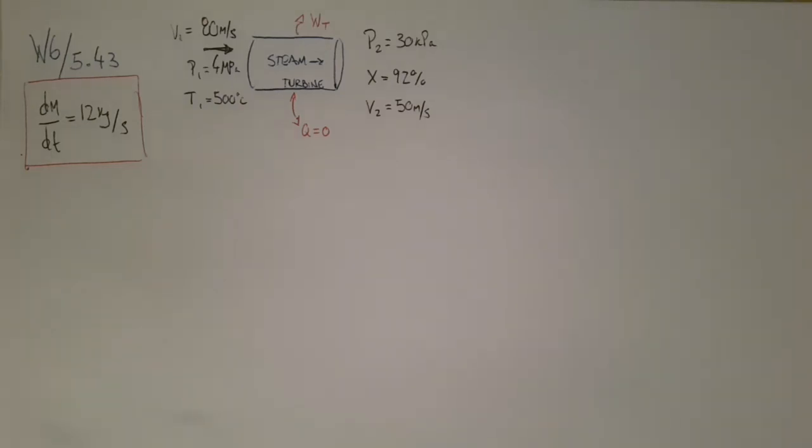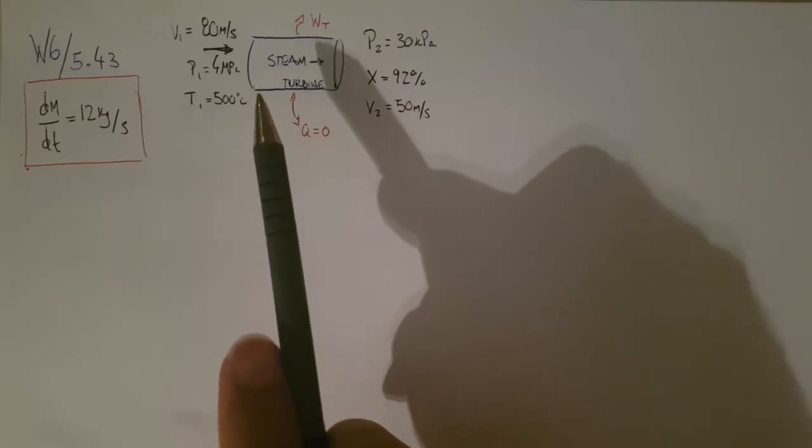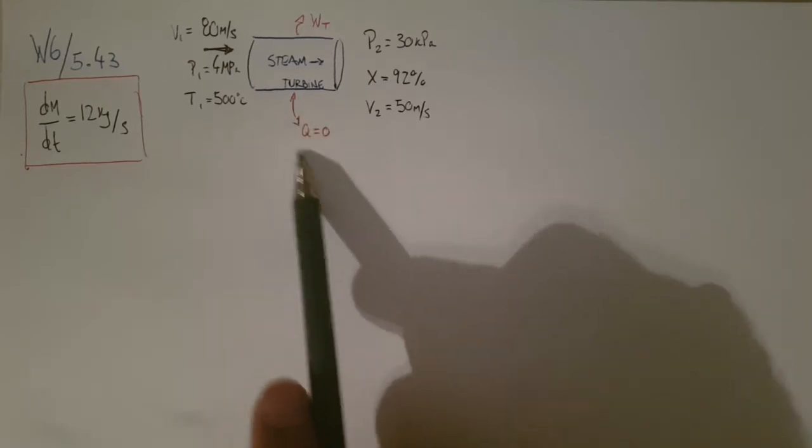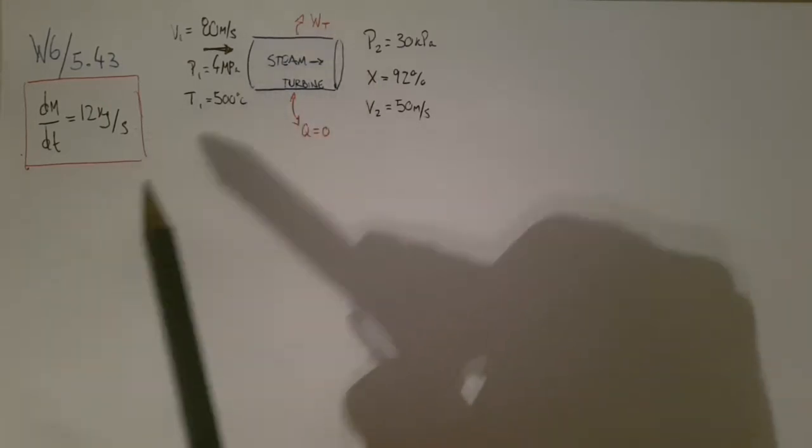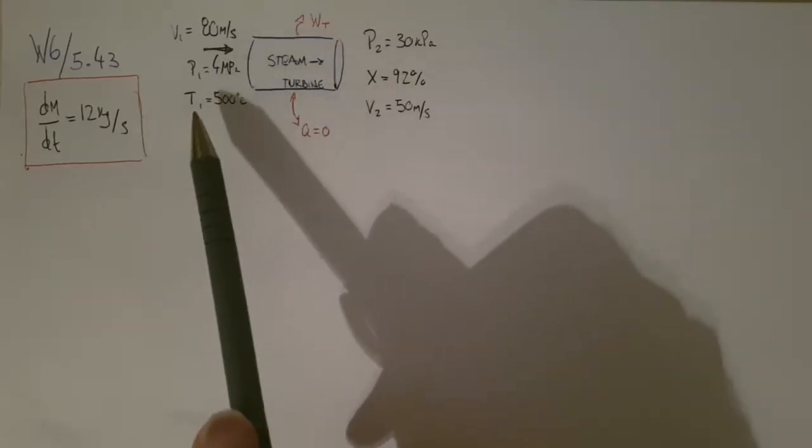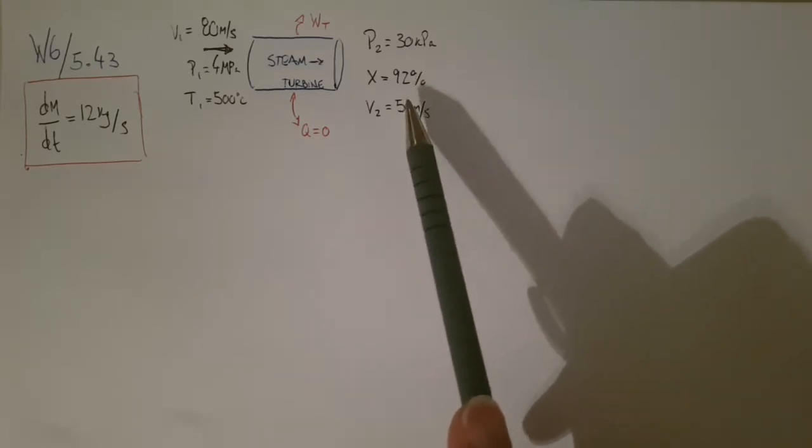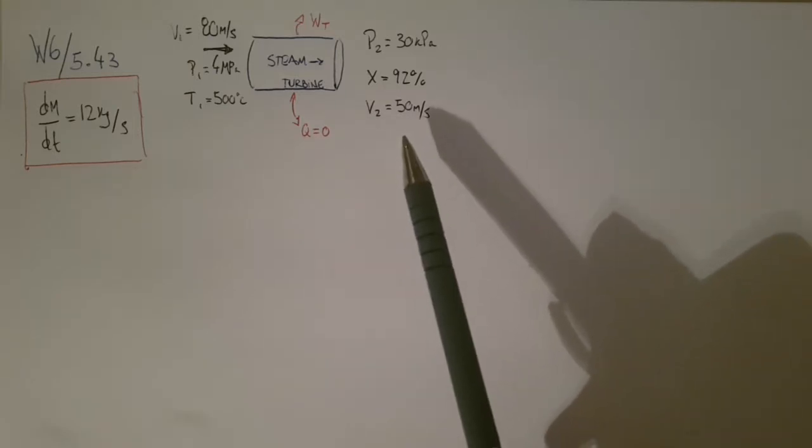Okay, so week 6, problem 5.43, in which we have a turbine. So we have steam which flows steadily through an adiabatic turbine, so there's no heat going into or out of this turbine. The inlet conditions are 500°C, 4 megapascals, and a velocity of 80 meters per second. And then the leaving conditions are 30 kilopascals, 92% quality, so 92% of what leaves is vapor, 8% is liquid, and a velocity of 50 meters per second.